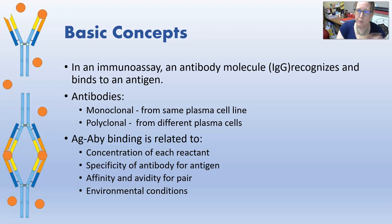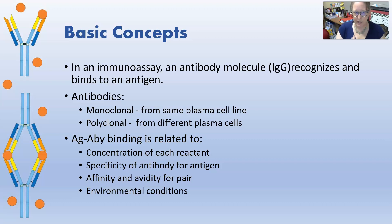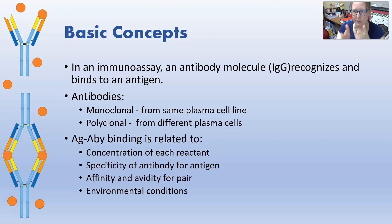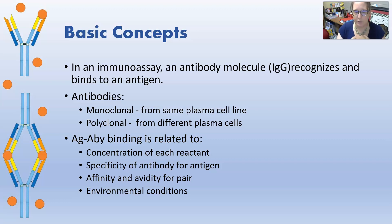Some assays use monoclonal antibodies for higher specificity; some may use polyclonal antibodies. Antigen-antibody binding is related to several things: the concentration of each reactant — so the concentration of antigens and antibodies — the specificity of the antibody for the antigen, whether it's cross-reacting or very specifically reacting with that antigen, and also the affinity and avidity for that antigen-antibody interaction, plus environmental conditions like temperature and acidity.